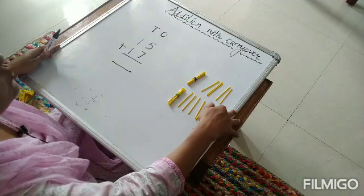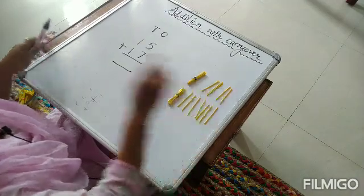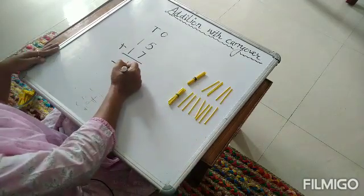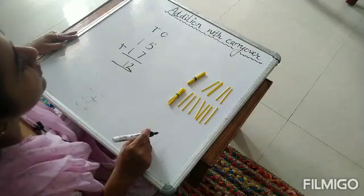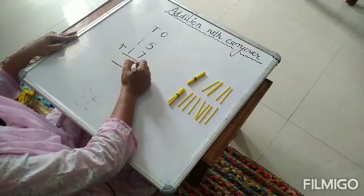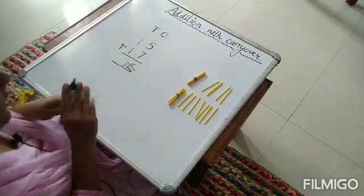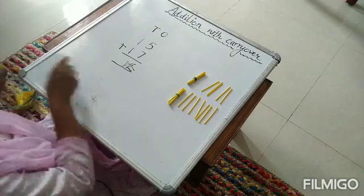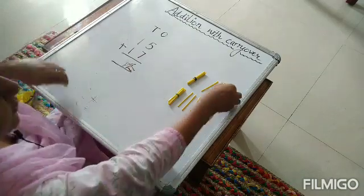So what we will do now is, we will write 12 here. Can I write 12 like this? What will we know? So this will be wrong.